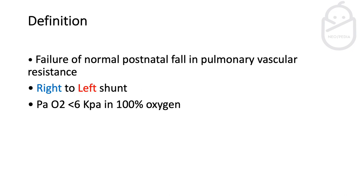The definition of PPHN is basically failure of the normal postnatal fall in the pulmonary vascular resistance, which will cause right-to-left shunt and poor oxygenation, where you will find the oxygen partial pressure less than six kilopascal in 100% oxygen.